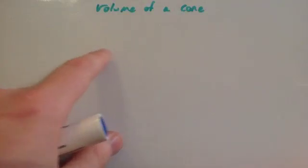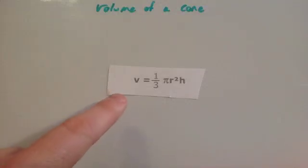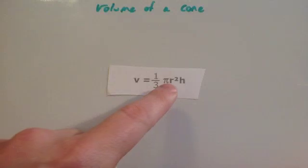In this video we're going to look at how to calculate the volume of a cone. So the volume of a cone is given by the formula V, volume, equals 1 third pi r squared times h.